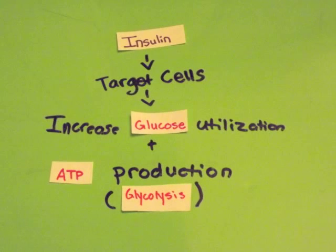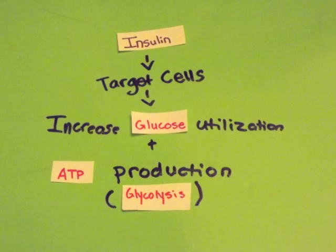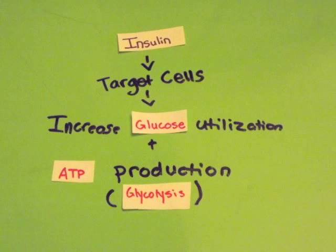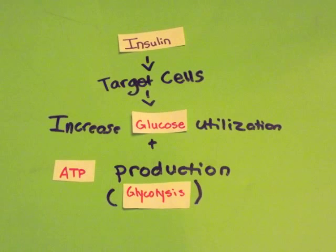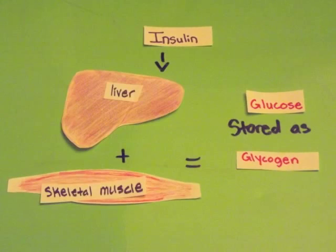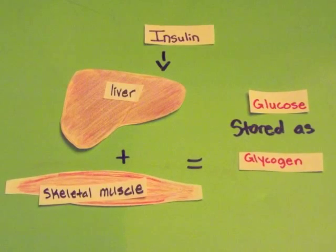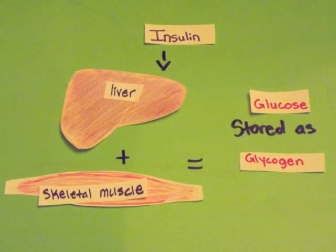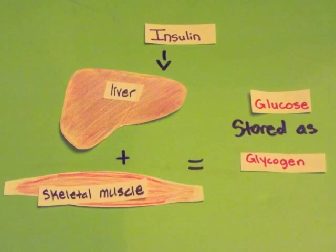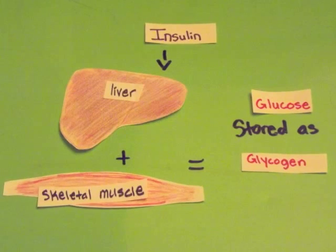The utilization of glucose is maximized along with ATP production. Through glycolysis, glucose is used to produce ATP, the molecule of energy. Glycogen formation is stimulated so that excess glucose is stored as glycogen in skeletal muscle and liver cells.